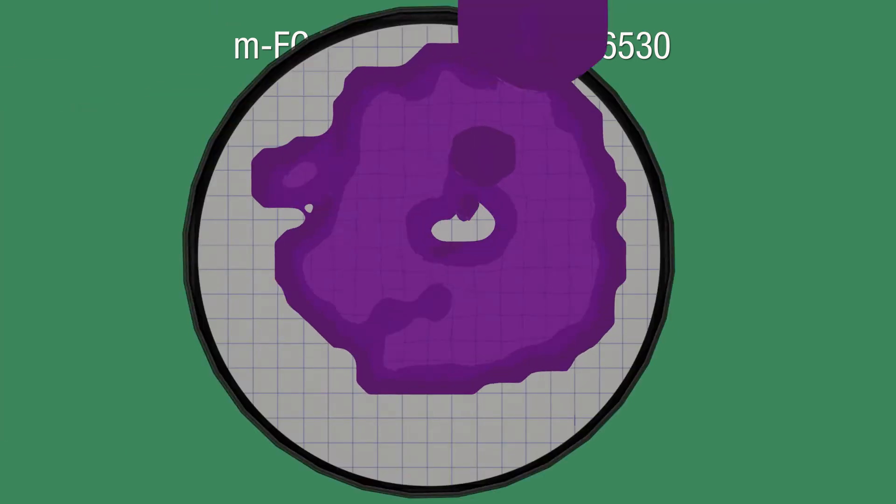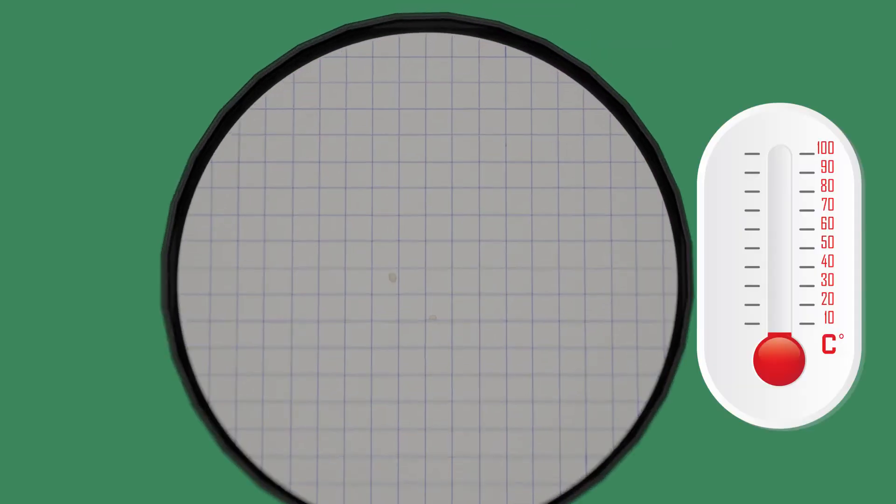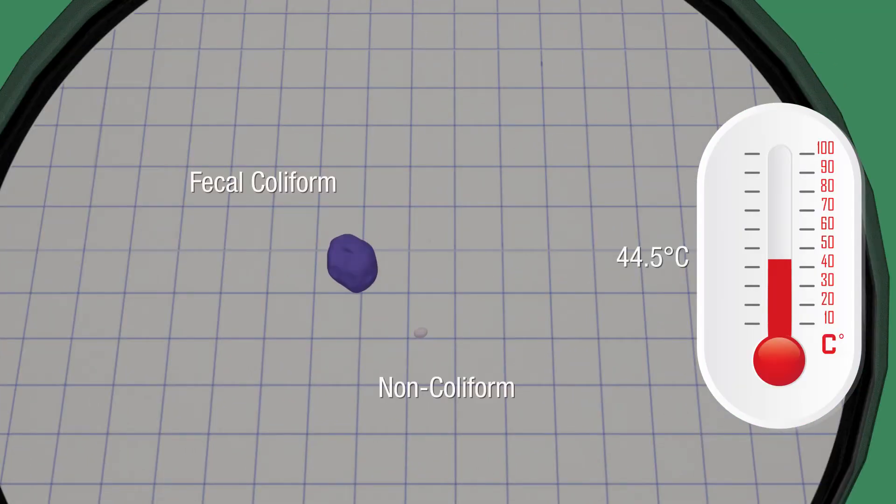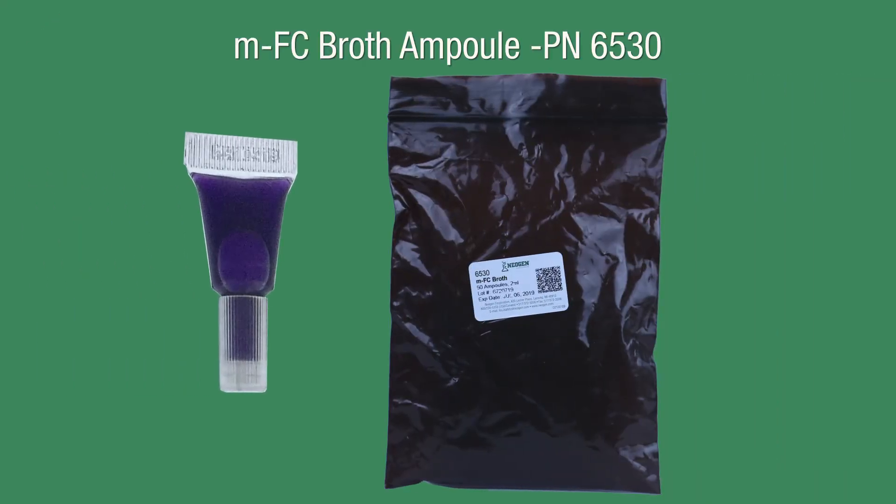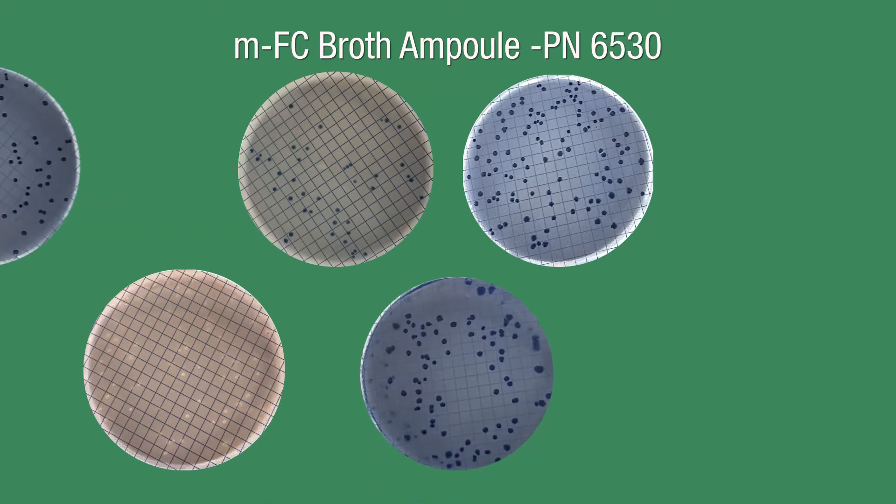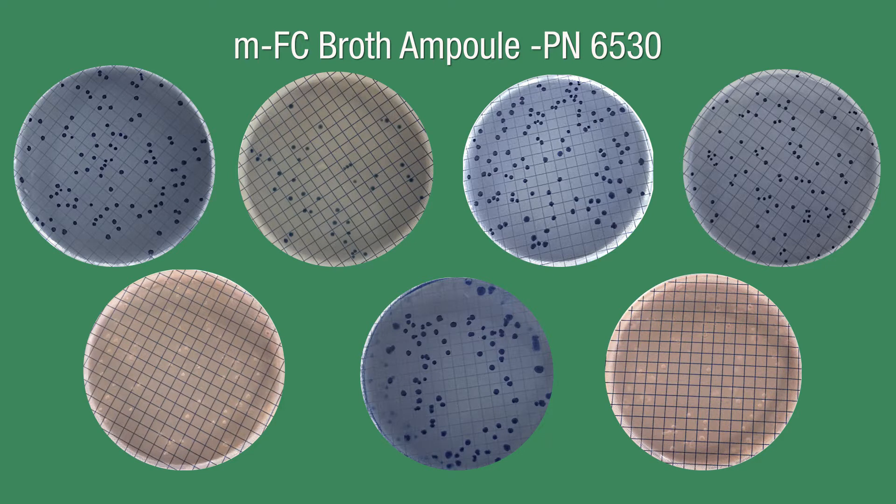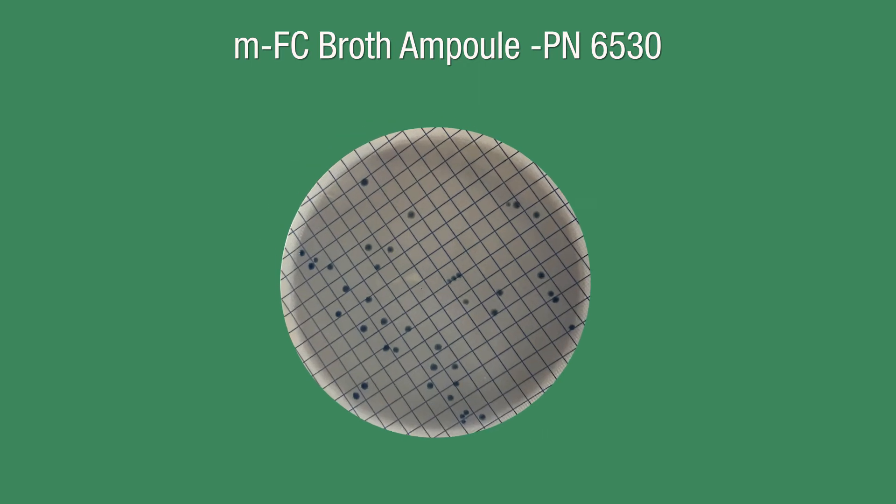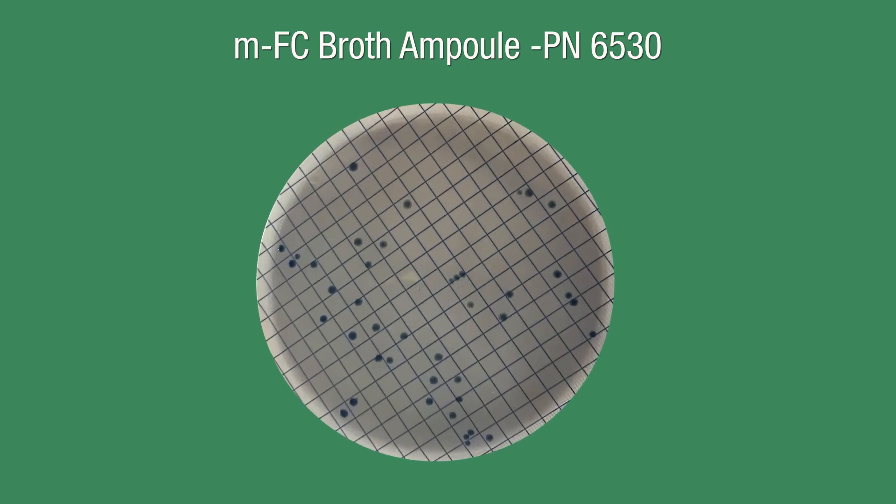MFC broth ampule. APHA and EPA recommended medium. This medium is for the enumeration of fecal coliforms. Its ability to grow at 44.5 degrees Celsius differentiates it from other coliforms. A selective medium that should be stored in the bag it is shipped in. Other organisms and non-fecal coliforms may recover, but they will form reddish-gray, gray or cream-colored colonies. To interpret these results, count all dark blue colonies present after incubation.